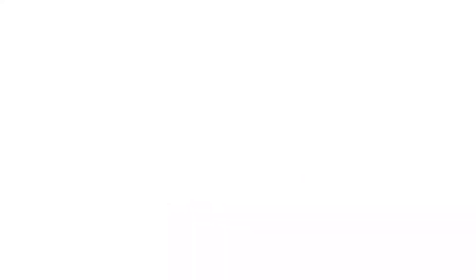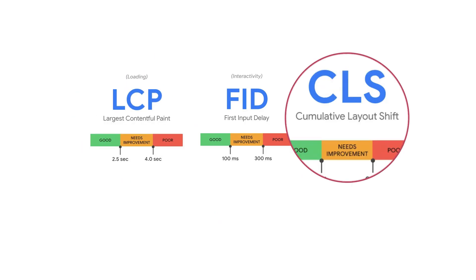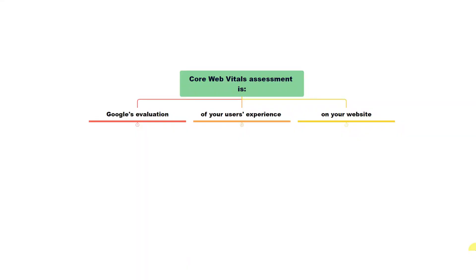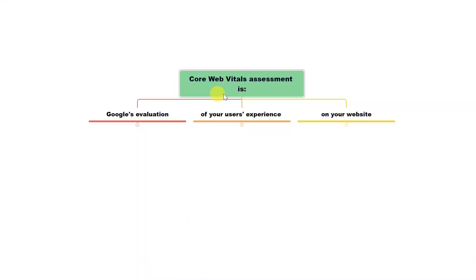To understand this, we need to truly understand what Core Web Vitals is, because we are used to referring to it as LCP — Largest Contentful Paint — CLS, Cumulative Layout Shift, FID, First Input Delay. But this is not what Core Web Vitals are. These are metrics that Google uses to evaluate website performance, but this is not the nature of Core Web Vitals assessment. Core Web Vitals is Google's evaluation of your users' experience on your website in terms of performance. So there are immediately three parts of it: Google's evaluation, your visitor's experience, and your website itself. None of this is static, none of this is simple — every part changes all the time.